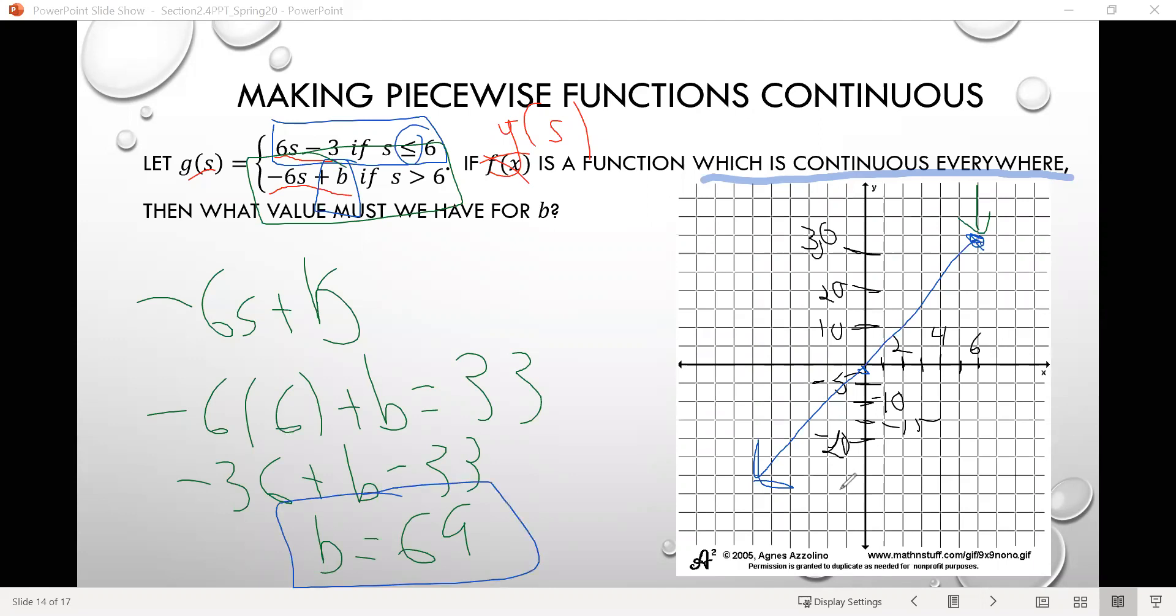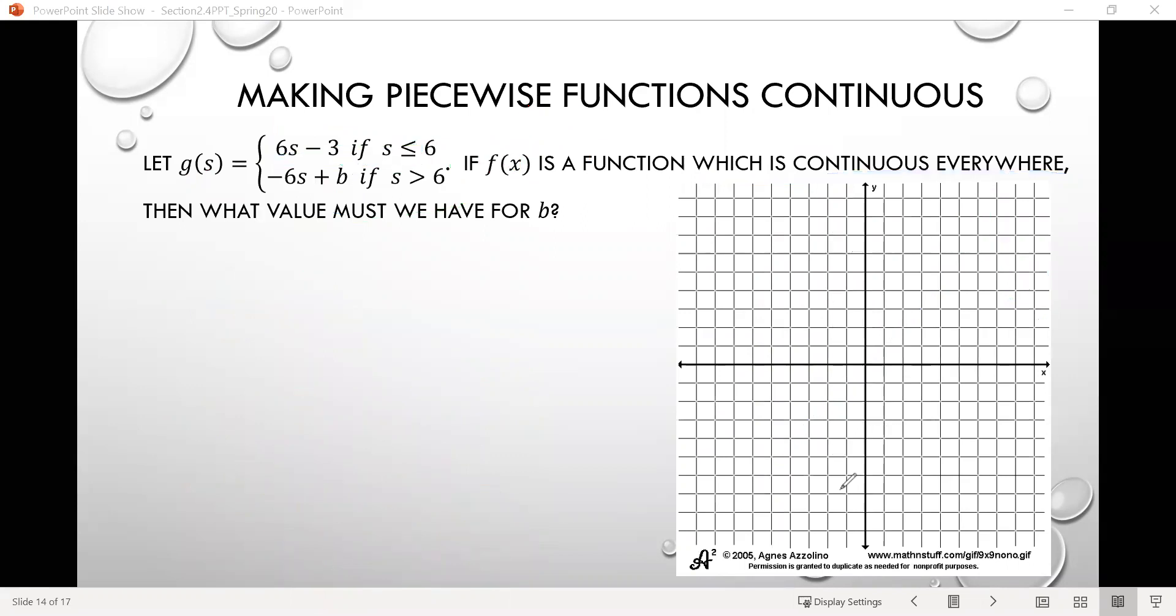So this function will be continuous everywhere if that value there for b is 69 because it'll meet right here at this point here. And then the graph will do whatever it does from there. I think it does something like that. All right.